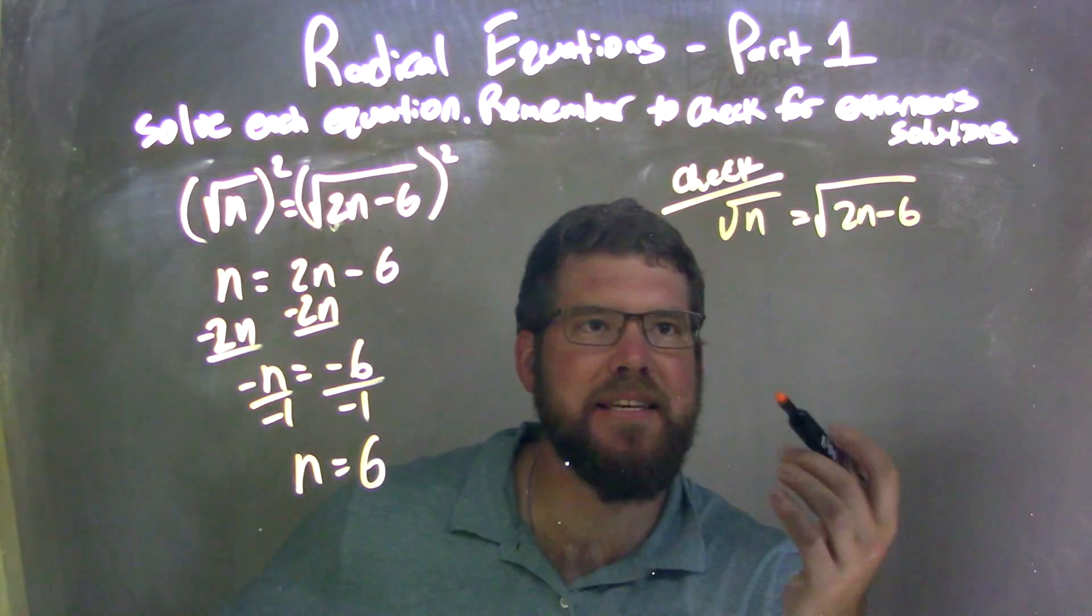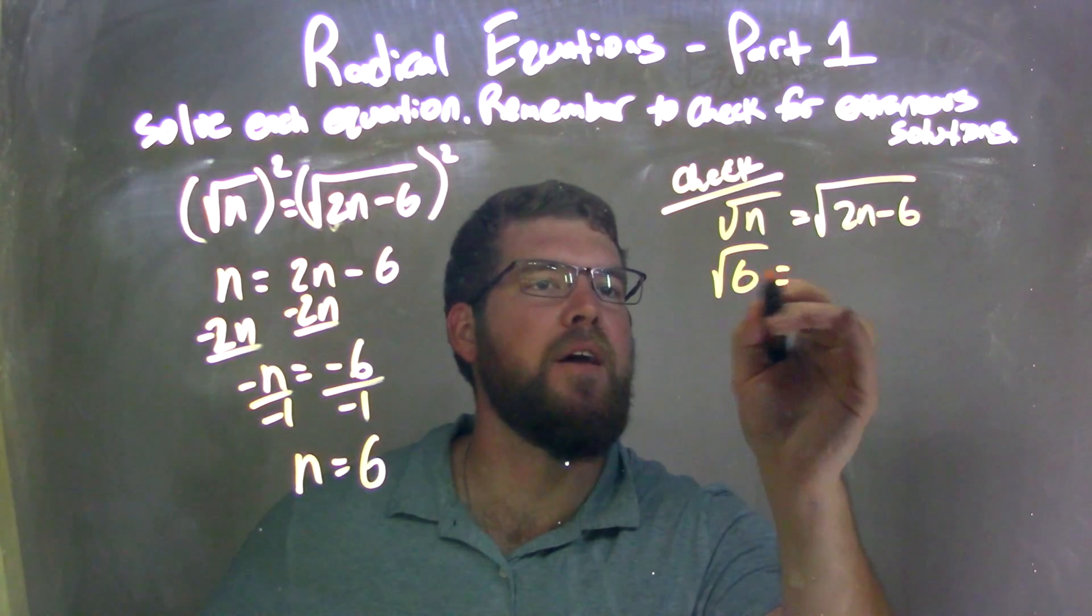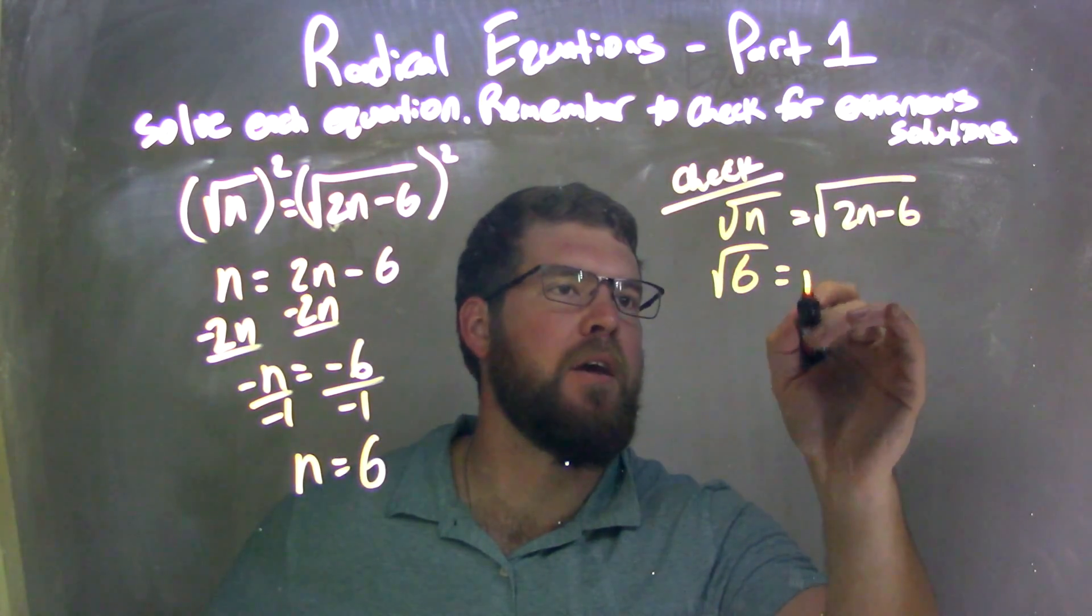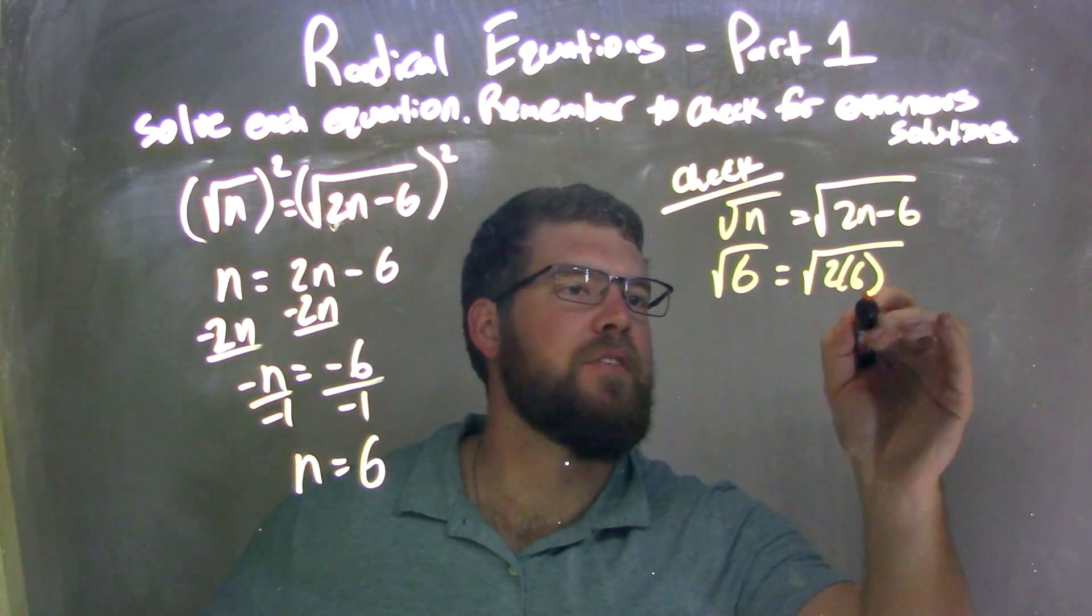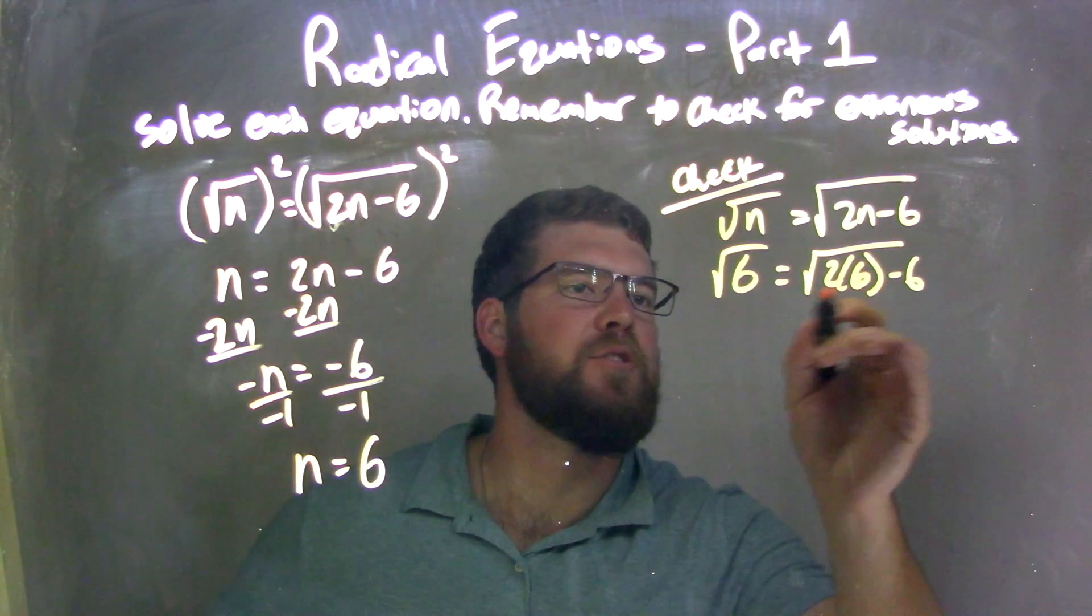And now I'm going to plug 6 in for n. Square root of 6 here on the left, which is fantastic. 2 times 6 minus 6. 2 times 6 is 12.